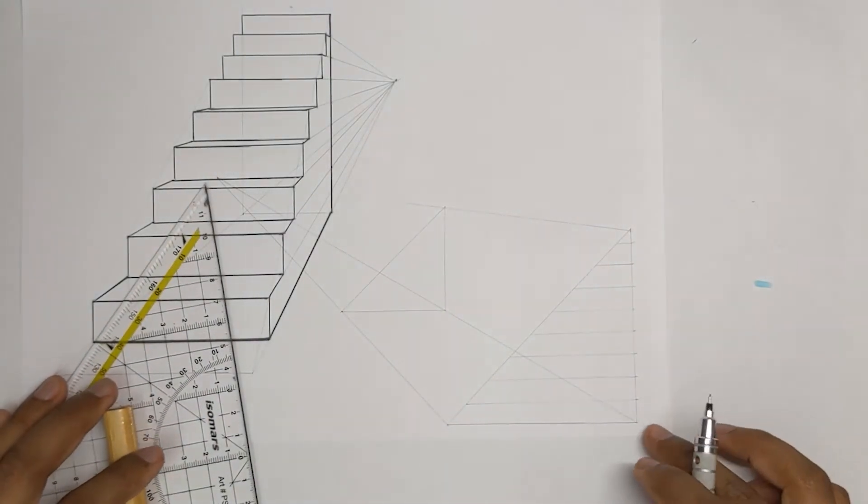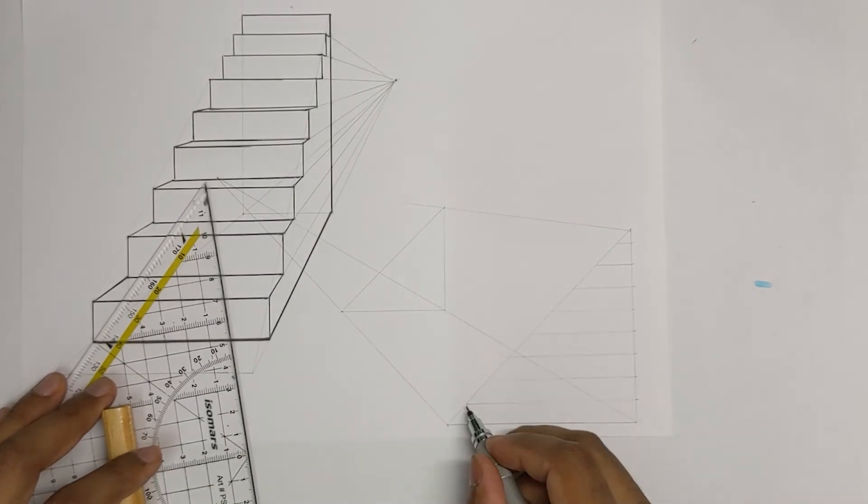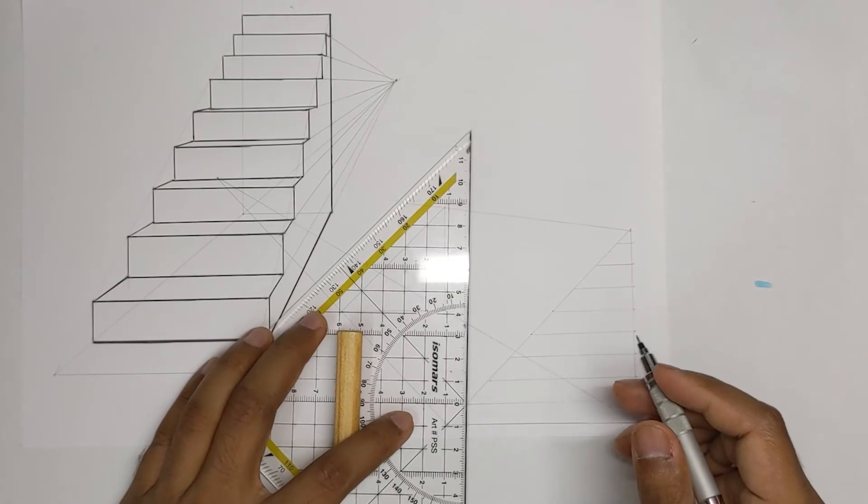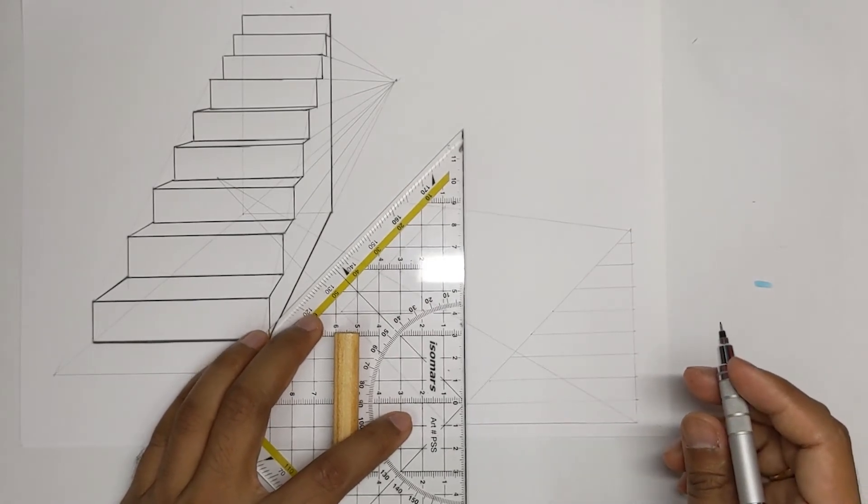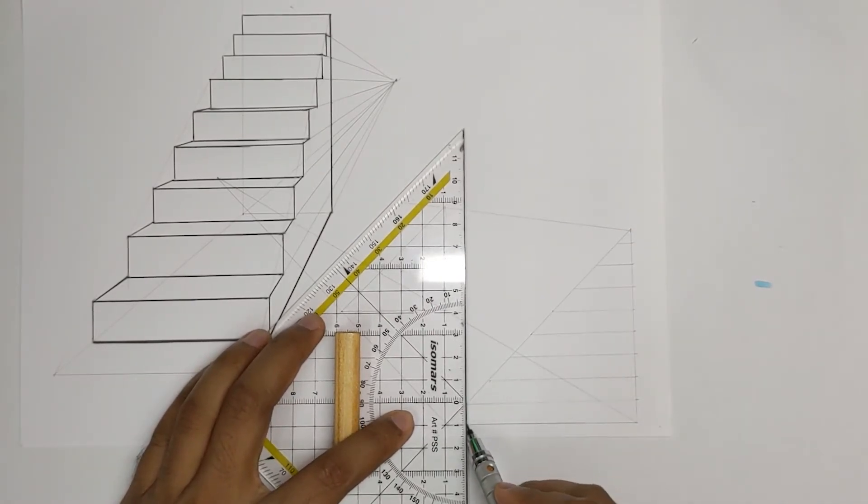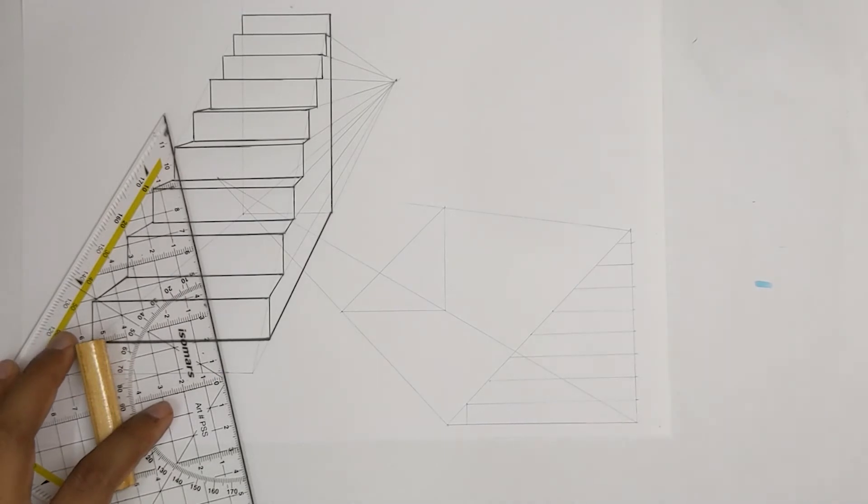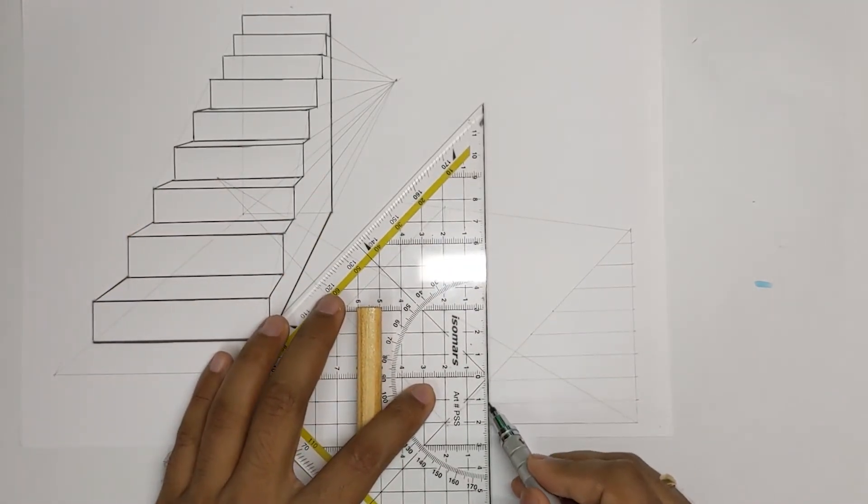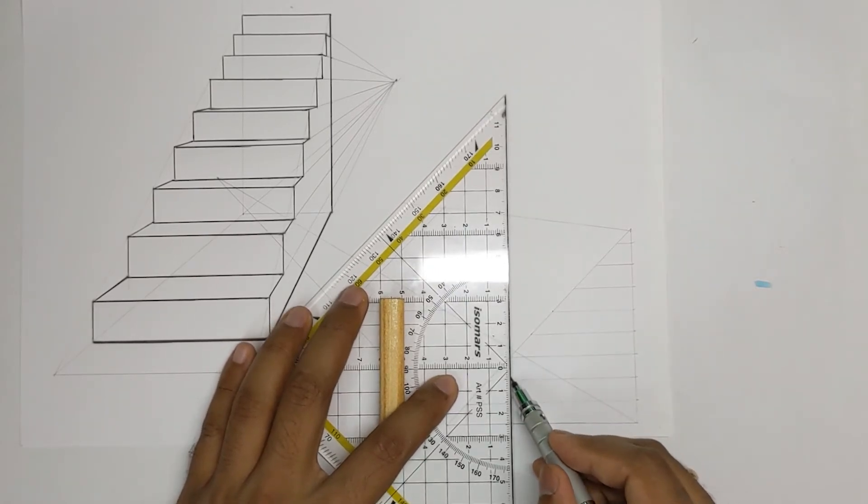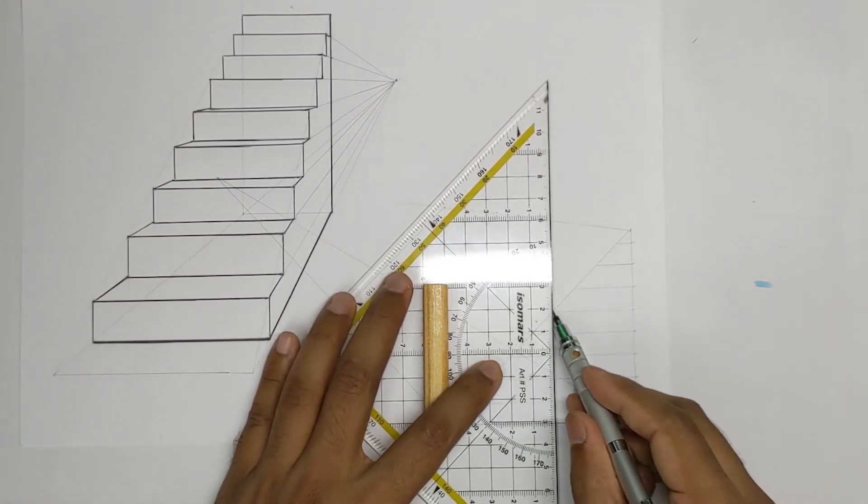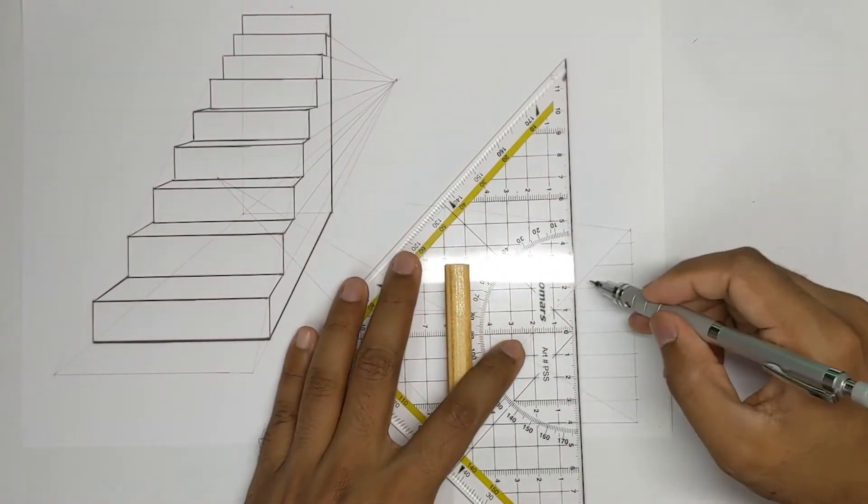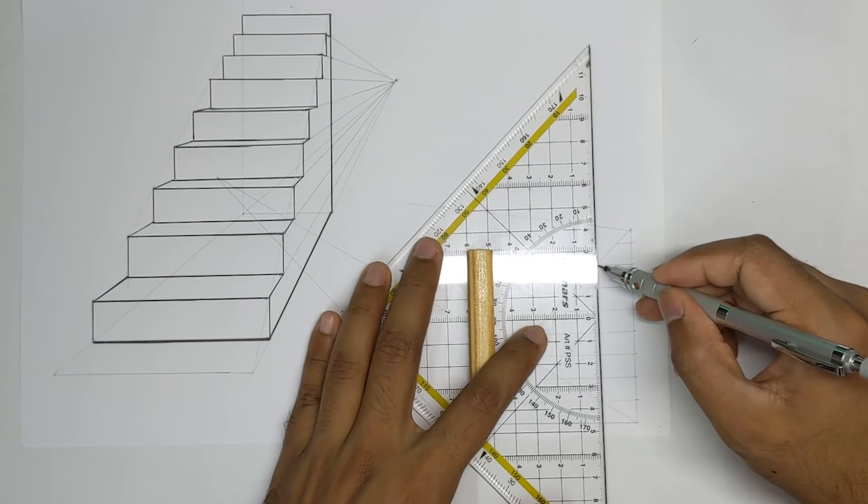All that matters is the skills that you are learning here. Now from these new intersection points draw perfect vertical lines until it meets with the horizontal line that you just drew. Again make sure to keep these lines nice and clean and nice and light.